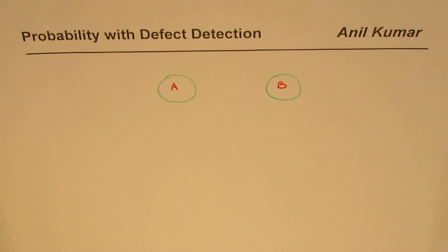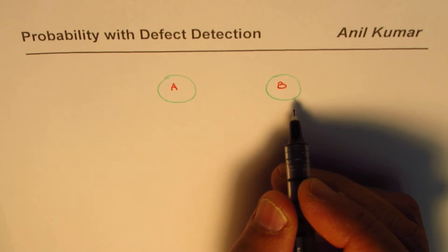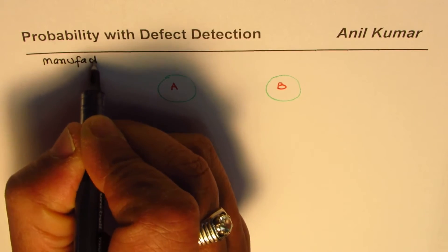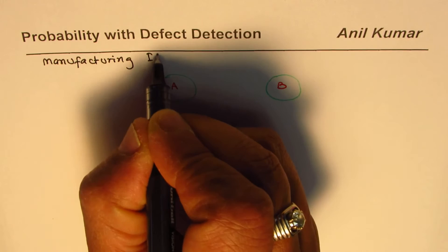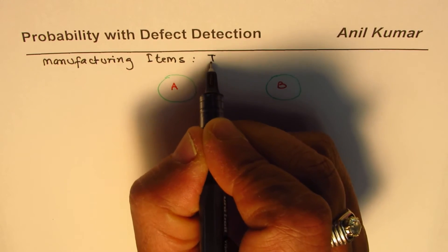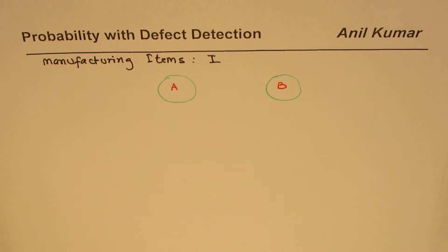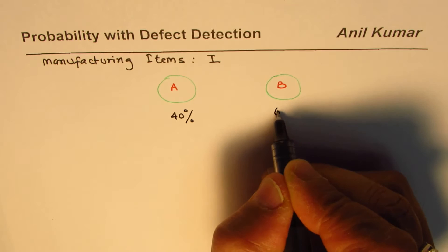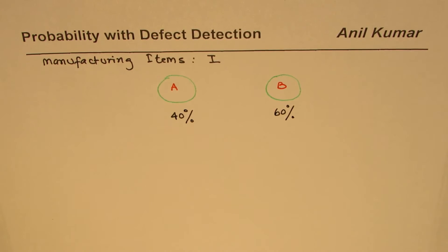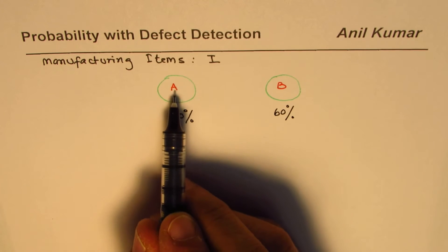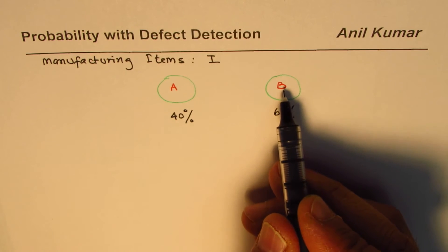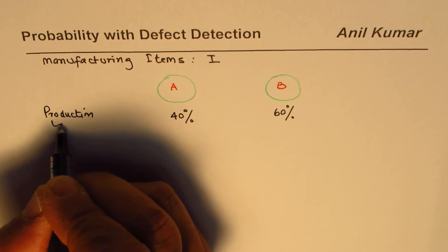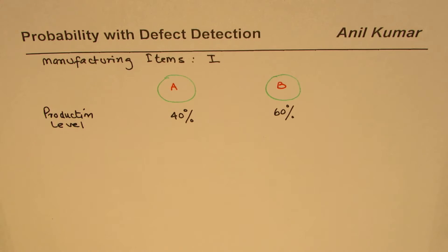Machine A and machine B are both producing items, represented by I. Machine A is working 40 percent of the time and machine B is working 60 percent of the time — or you can say machine A produces 40 percent of the items and machine B produces 60 percent of the items. That is the production level.